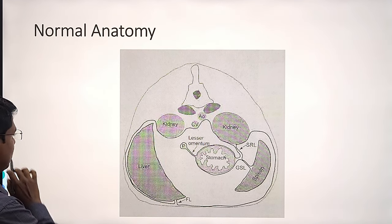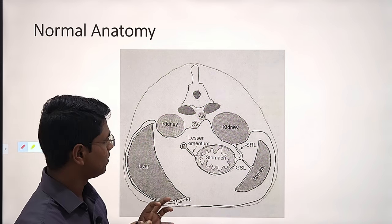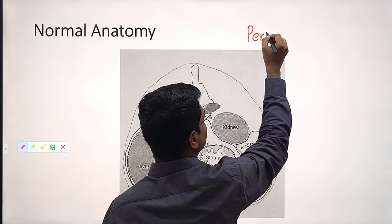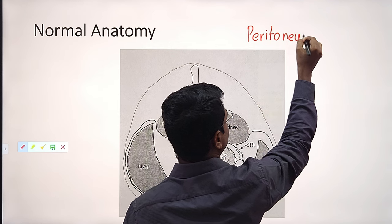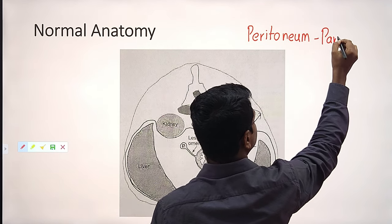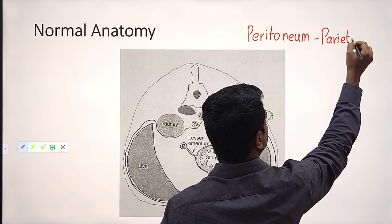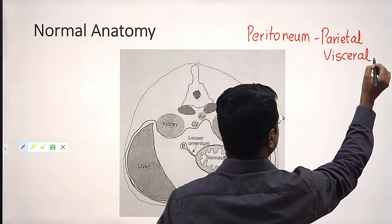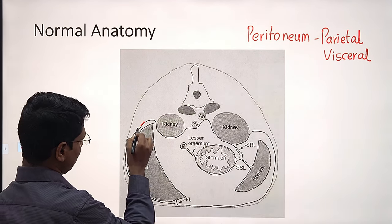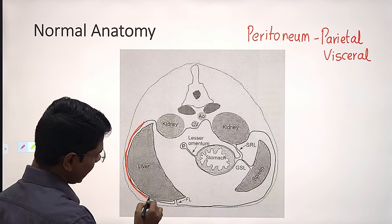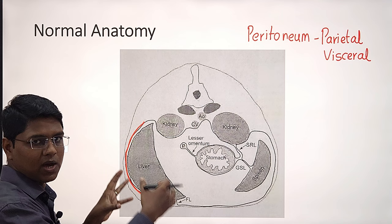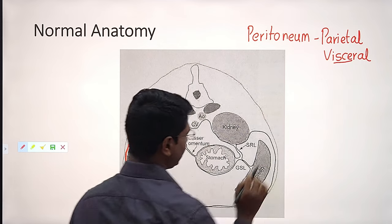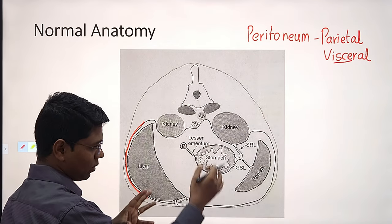Peritoneum has two layers. One is parietal peritoneum. Another one is the visceral peritoneum. Parietal peritoneum usually adheres to the abdominal wall, especially the abdominal musculature. And the visceral peritoneum is the peritoneum which covers the internal organs.